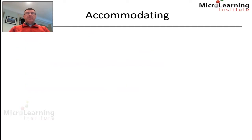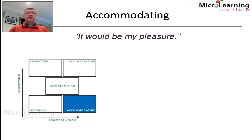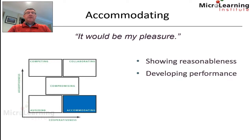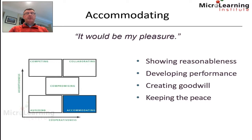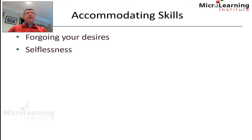The accommodating approach is where we want to be very cooperative but not assertive. The catchphrase here is: it will be my pleasure. We show a lot of reasonableness, create goodwill for future engagements, and keep the peace by accommodating the desires of our colleagues. Accommodating skills include foregoing your own desires, being selfless and obedient, and showing an ability to yield.